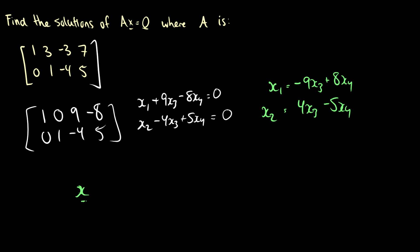So we now need to solve in terms of x1 and x2. So we say x1 is equal to -9x3 plus 8x4, and x2 is equal to 4x3 minus 5x4. So remember our solution of Ax equal to 0 is a vector x.